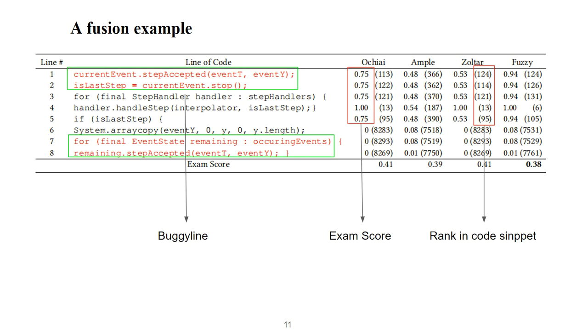This is a simple fusion case from Defects4J project code snippets in our paper. Three formulas, Ochiai, Ample, and Tarantula are included in the fuzzy fusion process. The column fuzzy shows the final suspicion score and a ranking for each line using the proposed approach, which fuses the column from 3 to 5. The exam score displays the overall performance on all the fault localization approaches. The proposed fusion approach achieves a better exam score, and it indicates better hit accuracy.